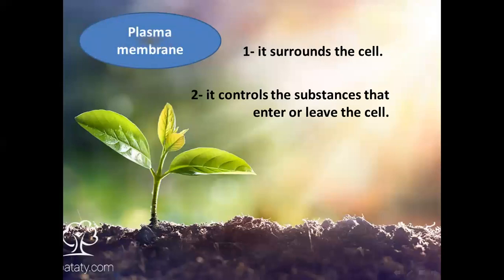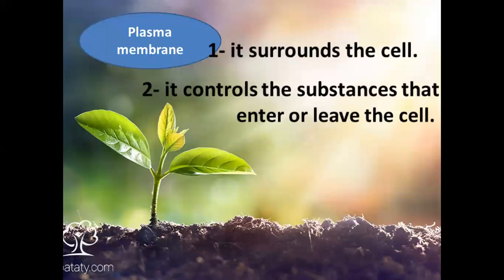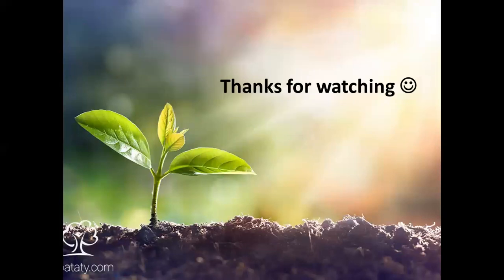The third component is the plasma membrane, which is the outer cover of the cell. Its first function is that it surrounds the cell. Its second function is that it controls all the substances that enter or leave the cell — if the cell needs a substance, the plasma membrane lets it enter; if not, it lets it leave. These are the two functions of the plasma membrane.